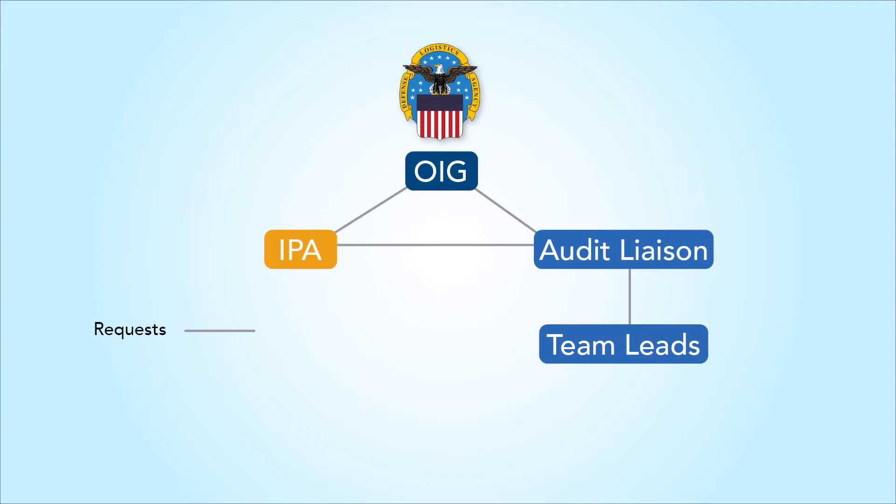The audit liaison will review the request and assign each task to the appropriate team through the team lead. From there, the team leads will review the request and assign it to the appropriate information gatherers. It's important that DLA supervisors make sure the right people are there to respond to the auditor's request for information. This would include subject matter experts, process owners, and anyone else that has detailed knowledge of the processes.